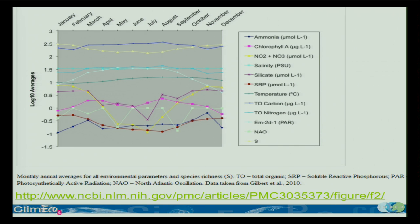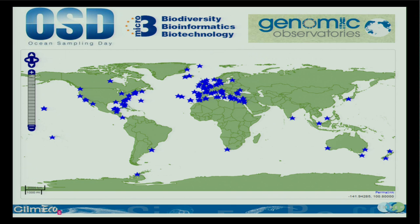If we think in terms of molecular data time series, that's something we might be looking for. One example is from the L4 station in the UK, where you have lots of environmental parameters — monthly averages — and they measure the bacterial sequences every month. So you have a nice time series, and S here is a biodiversity index — Shannon diversity. That's about the only very nice molecular time series you can find.